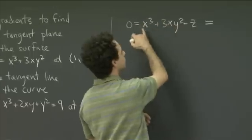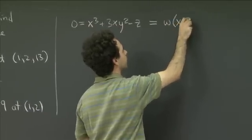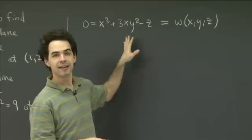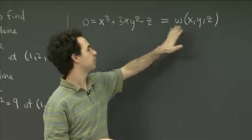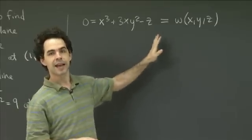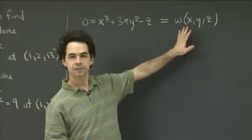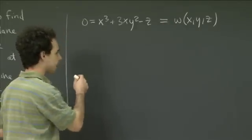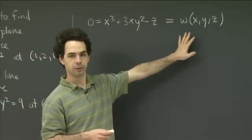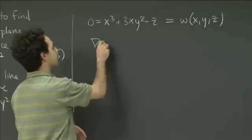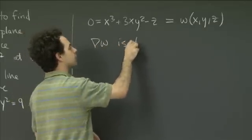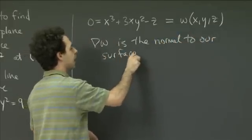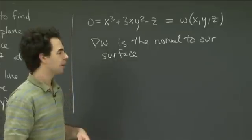And I'm going to define this right-hand side to be a new function w of x, y, z. So if I call this thing w, then our surface in question is just the level surface of w, the level surface w equals 0. And we know in that situation that the gradient of w is perpendicular to its level surfaces. It's orthogonal to its level surfaces. So the normal to our surface is exactly the gradient of w. And a normal is what we use to write down the equation for a tangent plane.